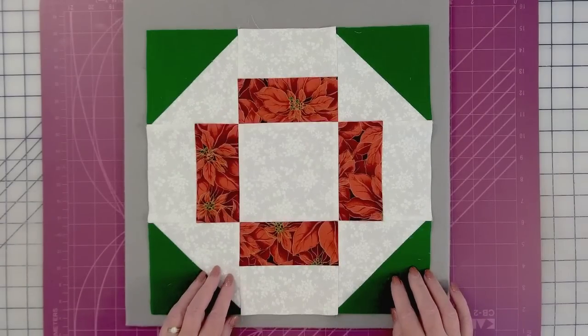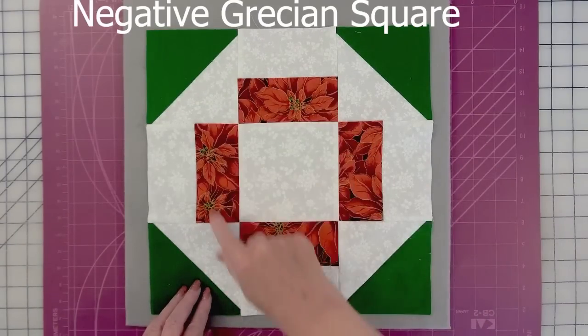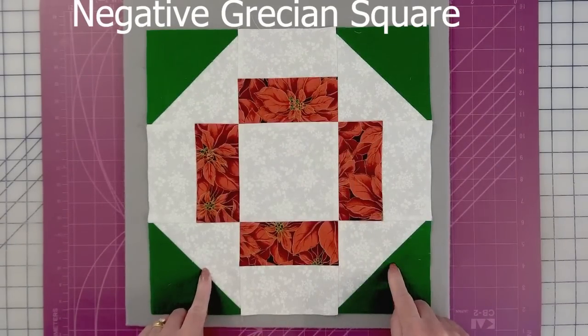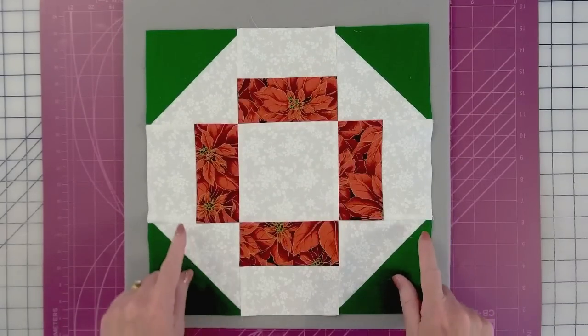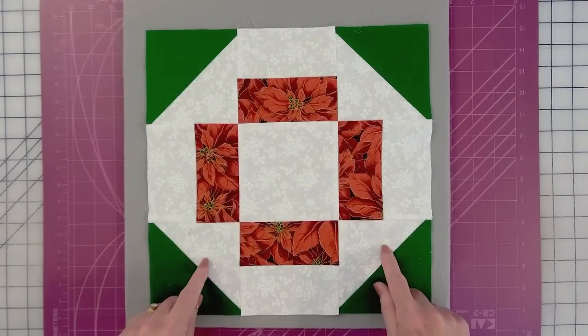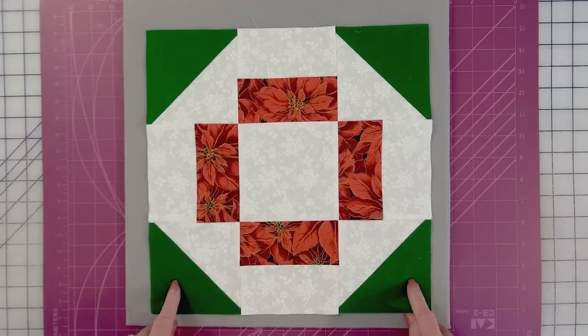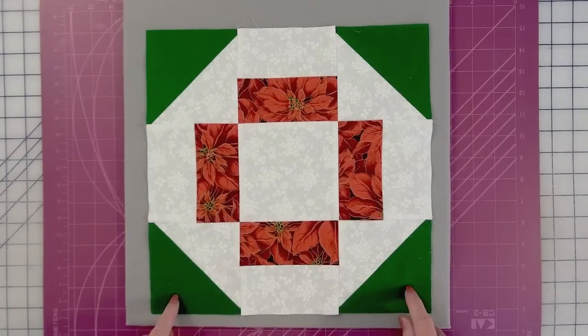Block number two is a negative Grecian square. Notice, it's just like the first one, except that where the first one had a green octagon, this has a white octagon. So, everywhere that was dark before is now light. Everywhere that was light before is now dark.